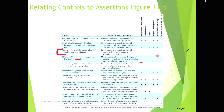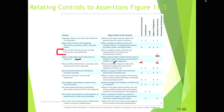That same credit approval control also supports the accuracy assertion — ensuring the sales amounts are correct. Some controls hit multiple assertions at once, which is desirable. We just want to make sure we're getting sufficient coverage across the assertions we care about most.